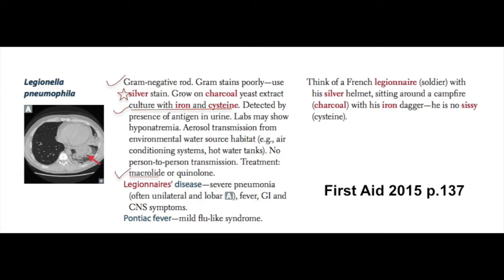The exam will also ask about how to isolate or culture Legionella, and what the treatment of choice is. The stain you have to remember is the silver stain — that's what you use for Legionella. For isolation, you grow it on charcoal yeast extract culture with iron and cysteine.